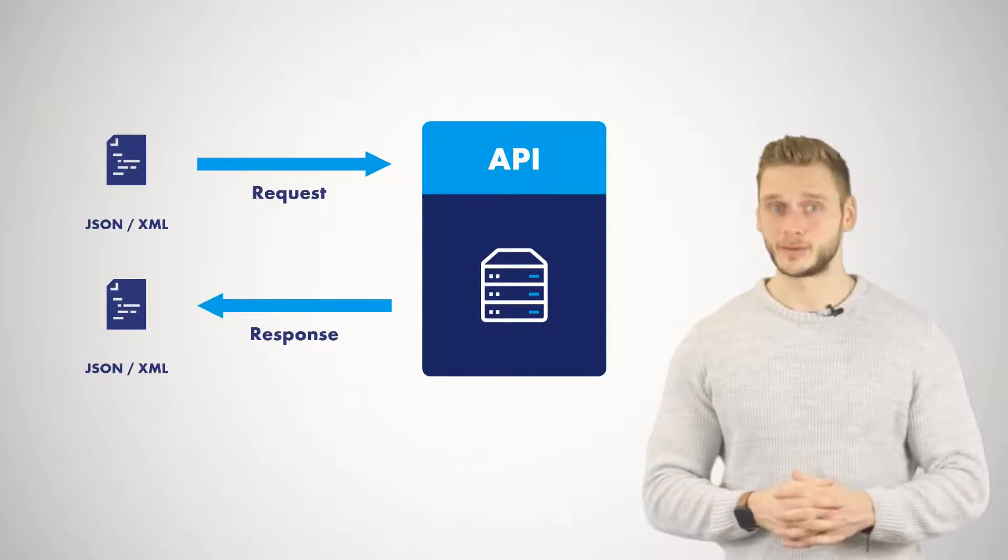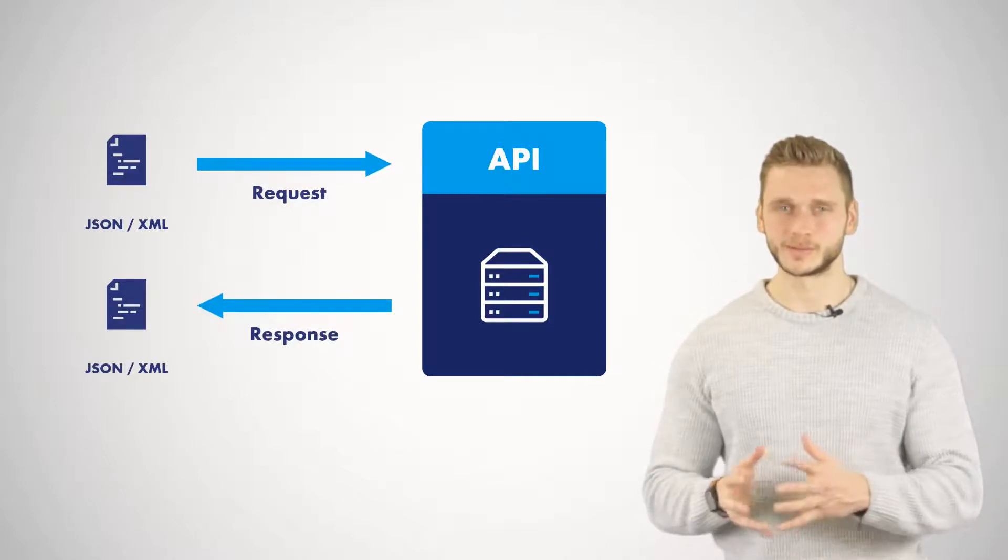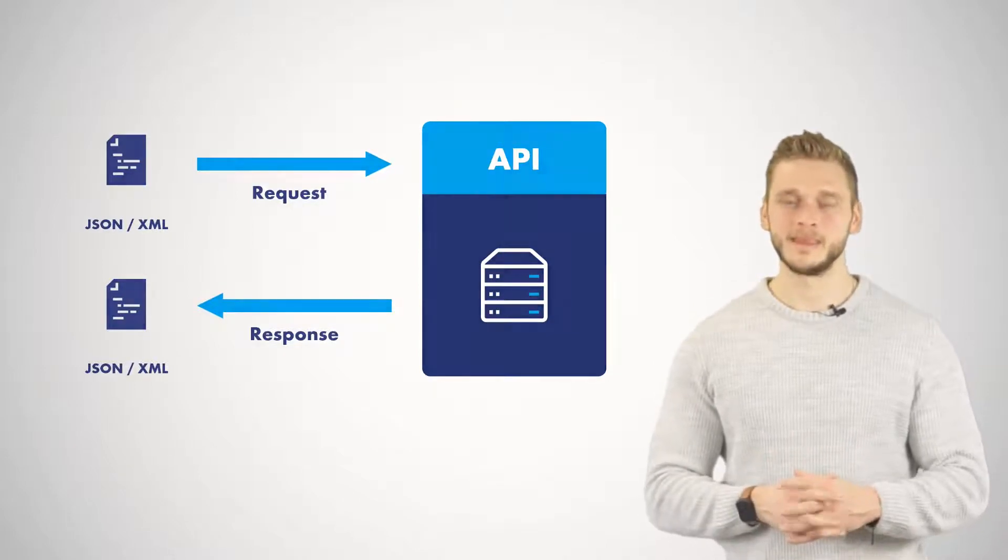one program such as Python can request information or send commands to another program such as RFM 6 which will respond appropriately. That is the big picture of how APIs work.